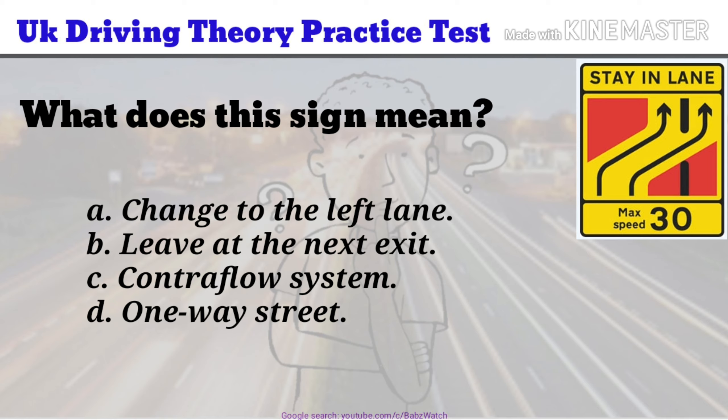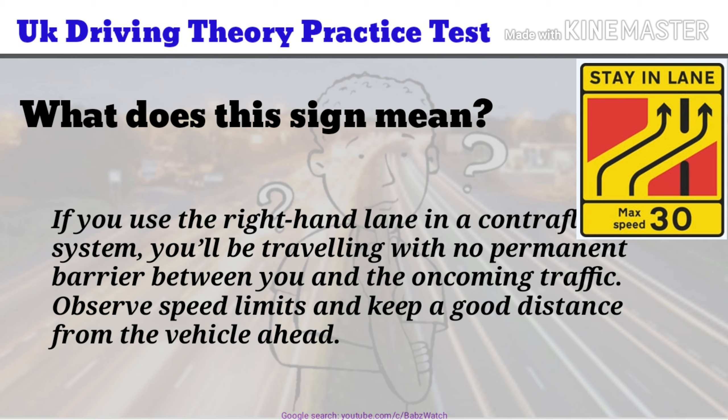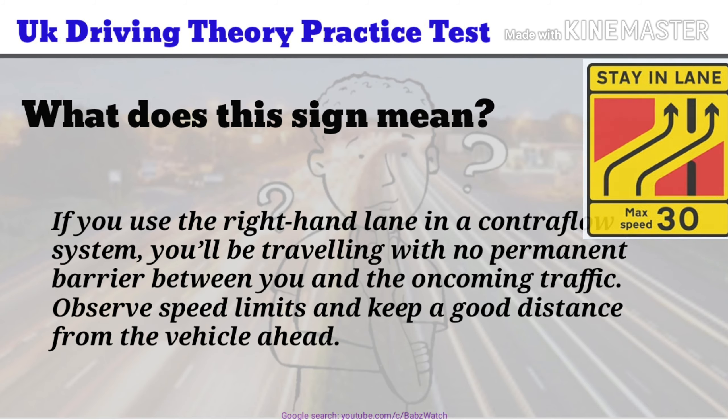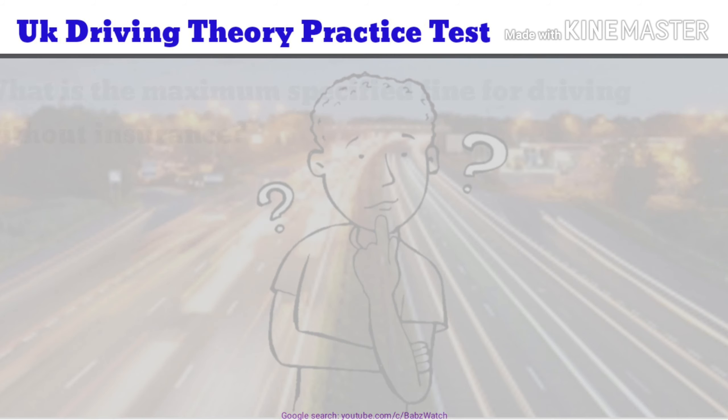Contraflow system. If you use the right-hand lane in a contraflow system, you'll be travelling with no permanent barrier between you and the oncoming traffic. Observe speed limits and keep a good distance from the vehicle ahead.